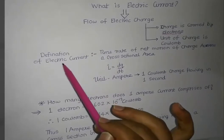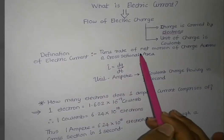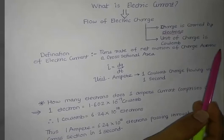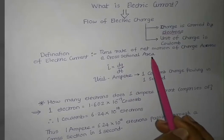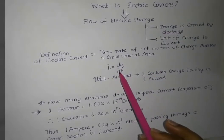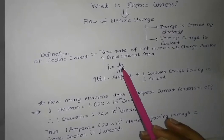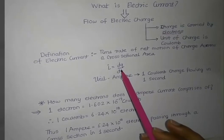Hence we can define electric current as the time rate of net motion of charge across a cross sectional area, i.e. i is equal to dq by dt.